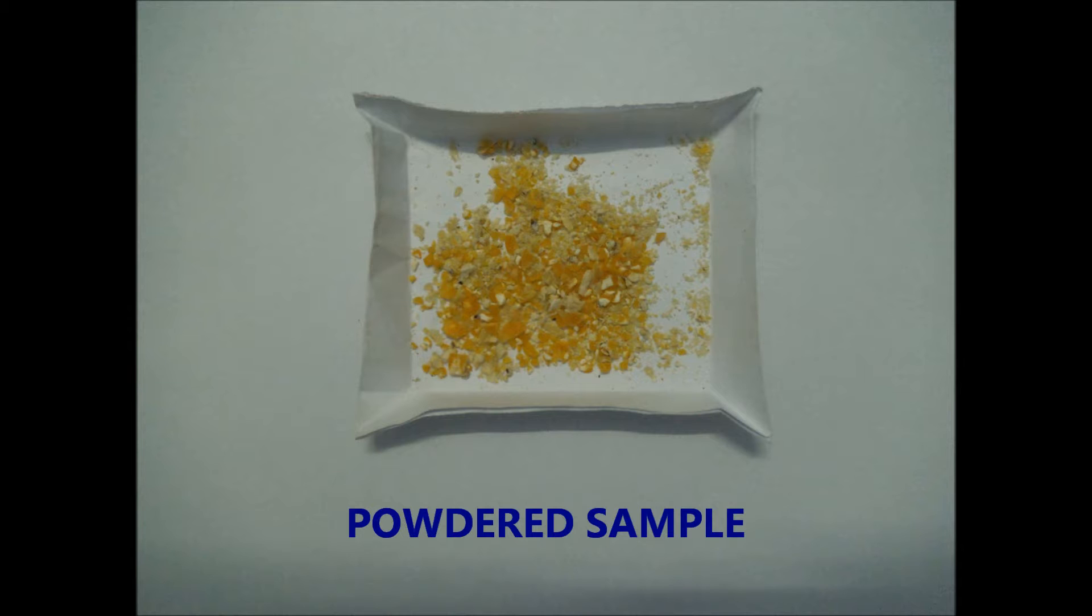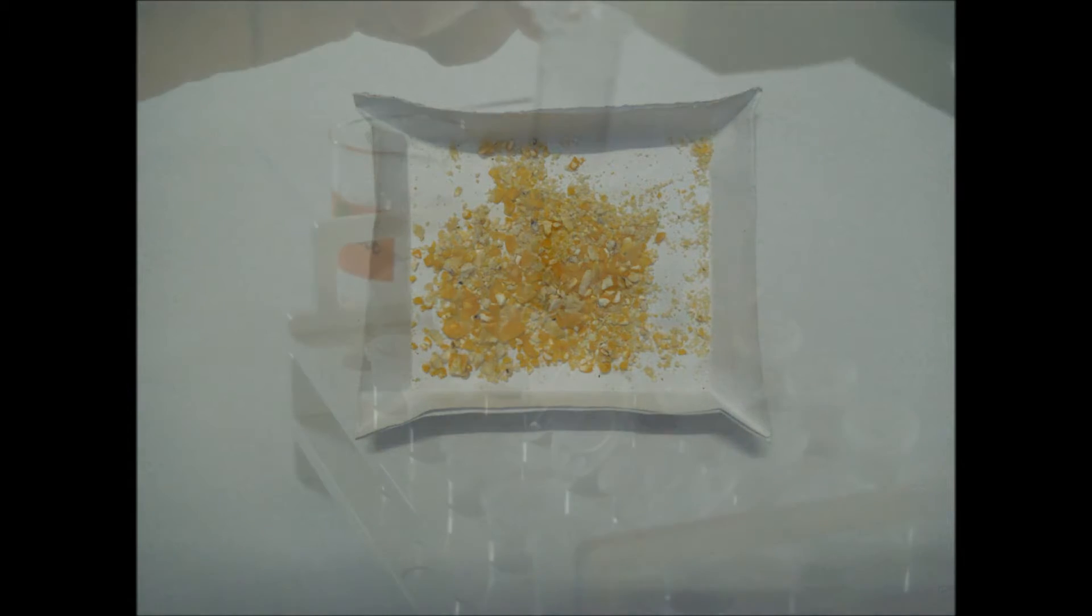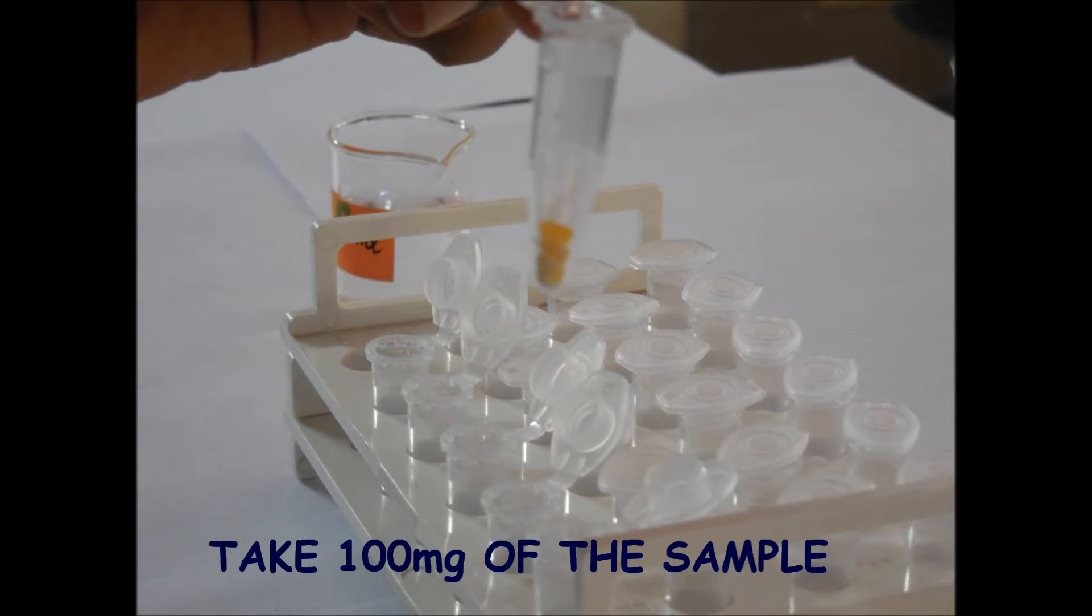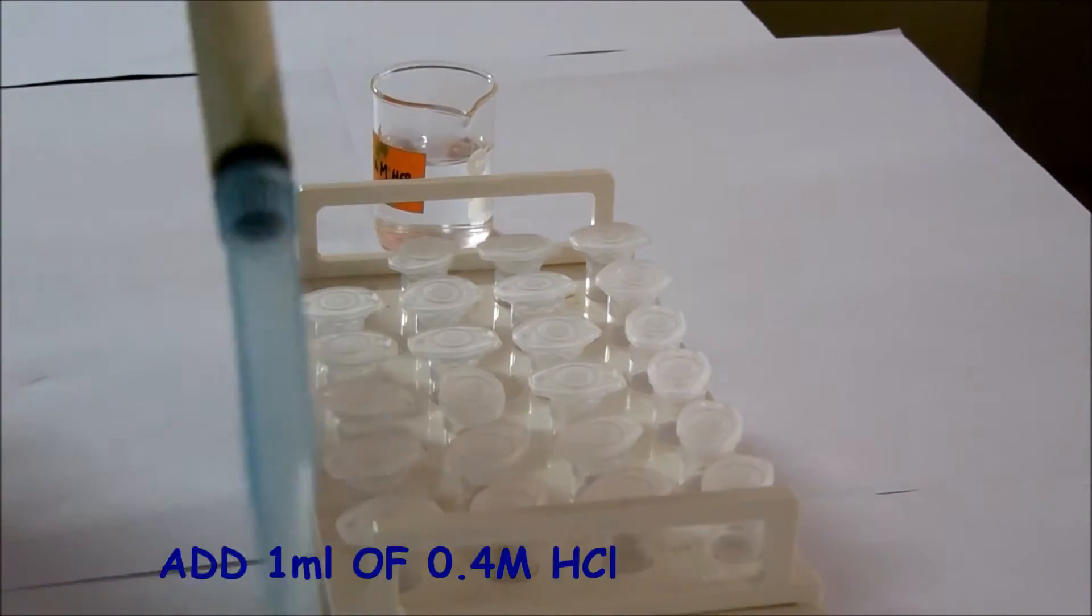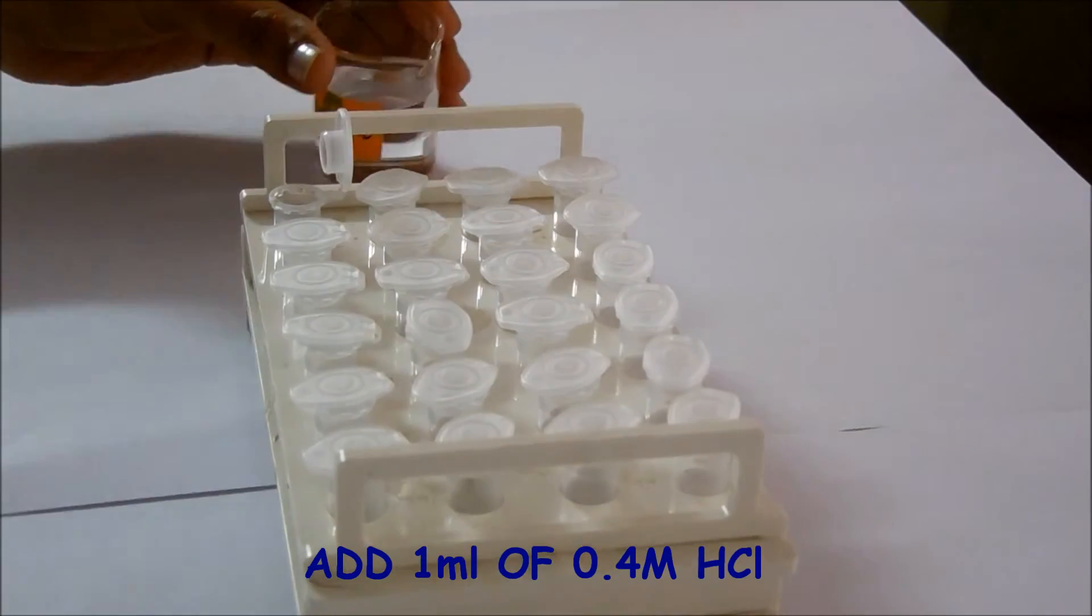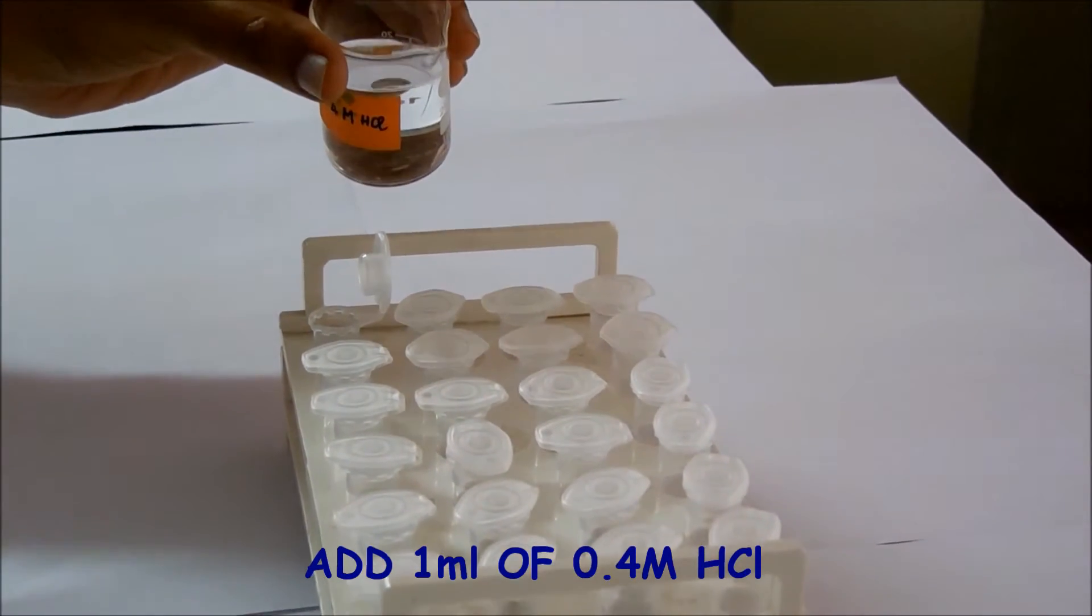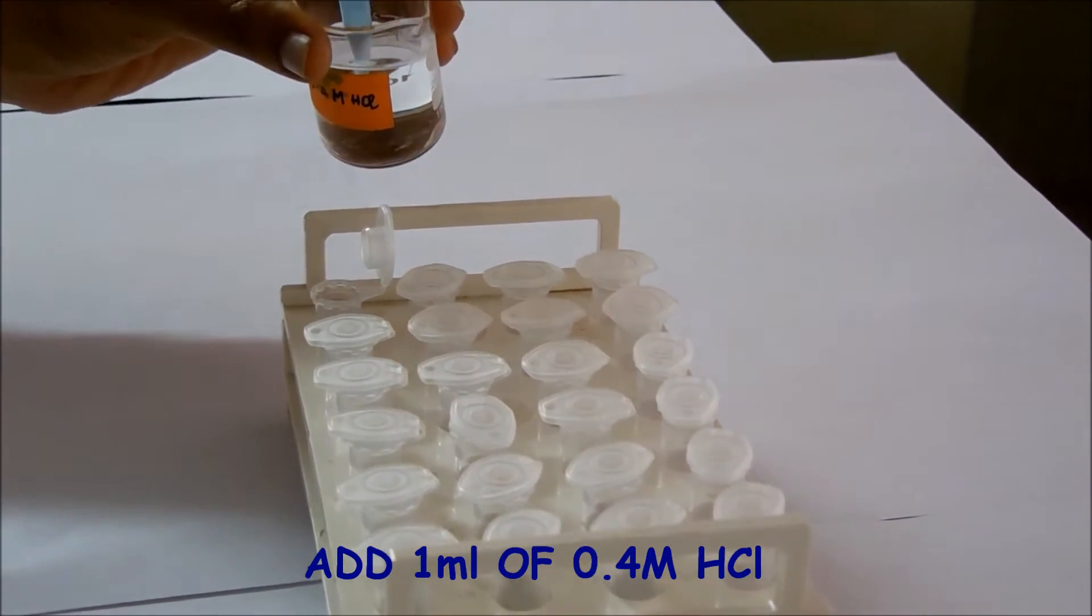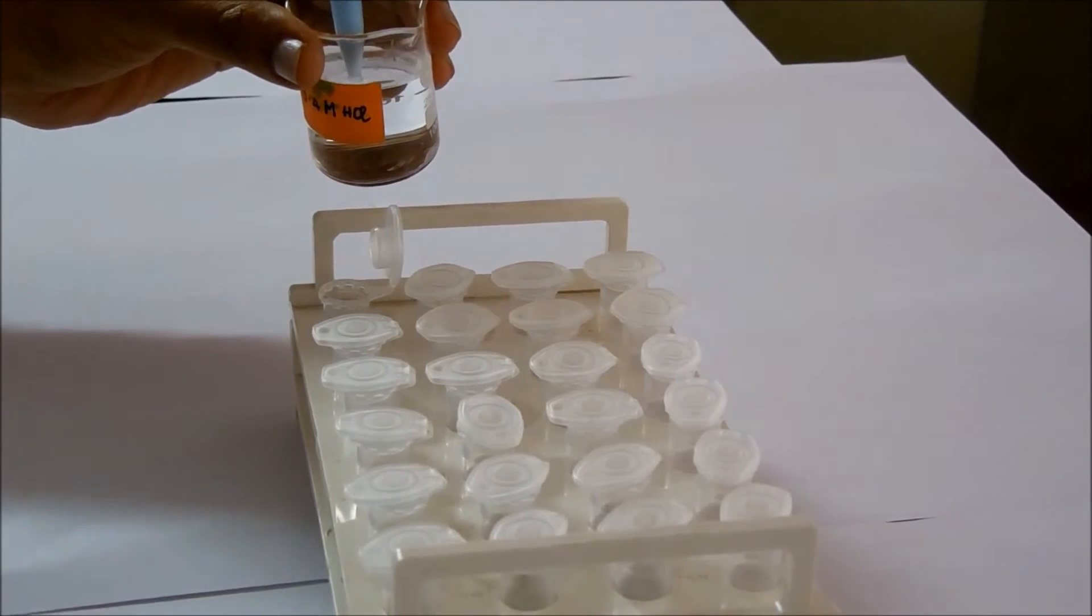Individual seeds were weighed and ground in a mortar with a steel pestle. Take 100 mg of sample. The resulting flour was extracted with 1 ml of 0.4 molar hydrochloric acid at room temperature for 1 hour.